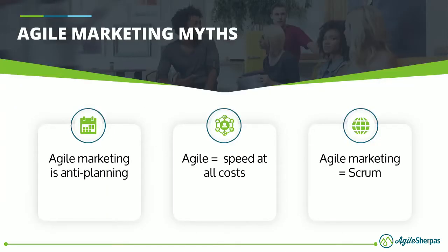So we've got these core considerations for marketing agility. I need to address some key myths before we get into practices because if we have these misconceptions in mind, we will misapply the practices I'm going to show you. The first myth is that somehow we don't plan in Agile marketing, that it just sort of works itself out. But that's definitely not the case — there is a lot of planning in an Agile environment, but it's different types of planning and it actually happens more often, covering a shorter time horizon.